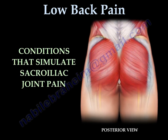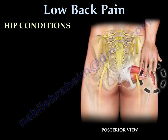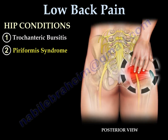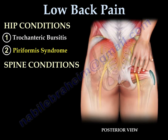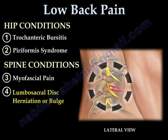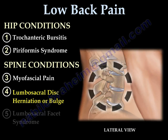Conditions that simulate sacroiliac joint pain are primarily associated with the hip and spine. Conditions of the hip include trochanteric bursitis and piriformis syndrome. Conditions associated with the spine include myofascial pain, lumbosacral disc herniation or bulge, and lumbosacral facet syndrome.